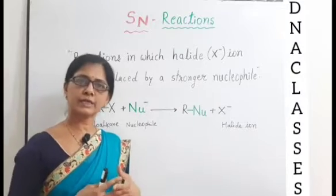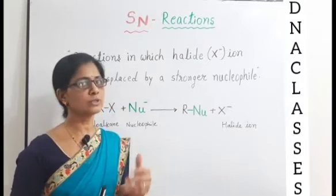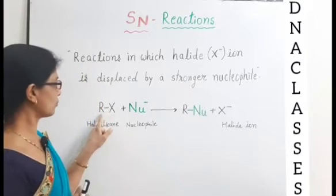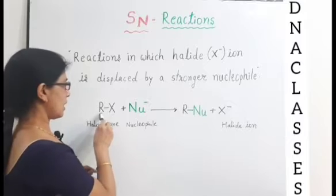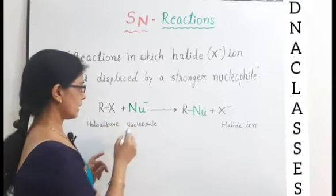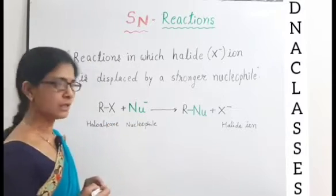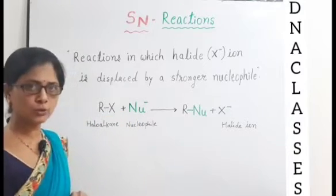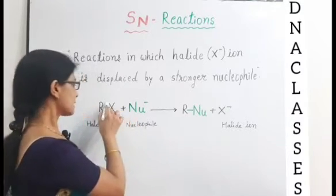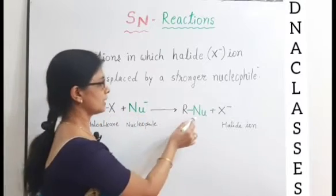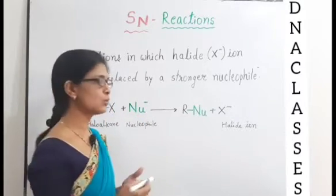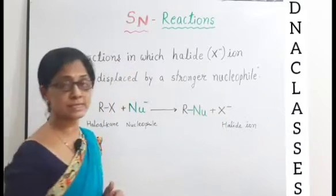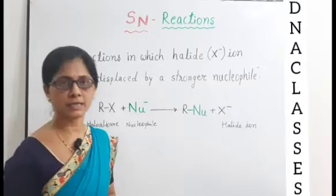We can represent SN reaction through this equation. This is the general formula of haloalkane: RX plus NU, where NU is nucleophile. When RX is attacked by any nucleophile, this X part, the halogen part, is substituted by nucleophile. You will get RNU plus X minus ion, means you will get halide ion.